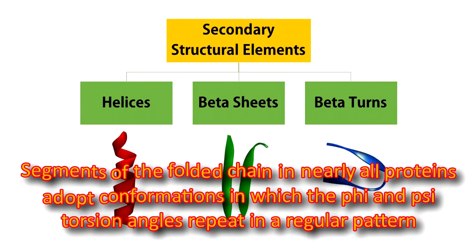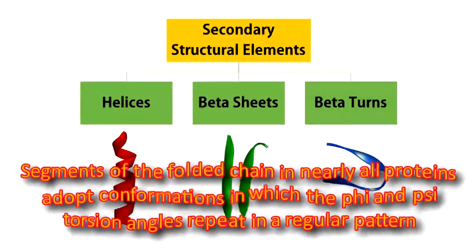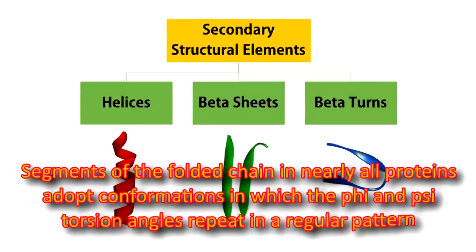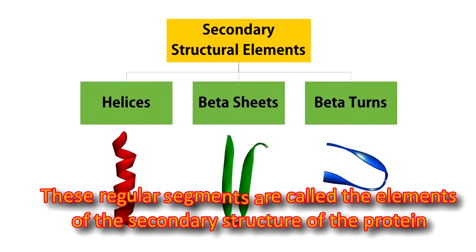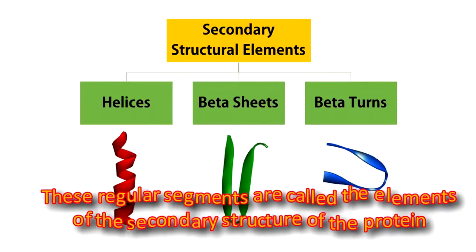Segments of the folded chain in nearly all proteins adapt conformations in which the phi and chi torsion angles repeat in a regular pattern. These regular segments are called the elements of secondary structure of the protein.